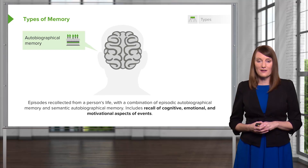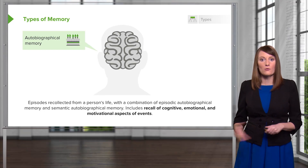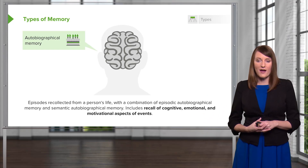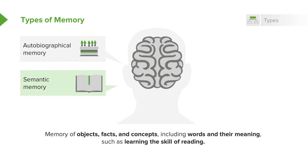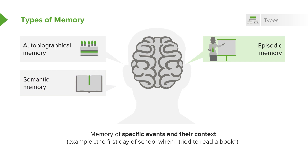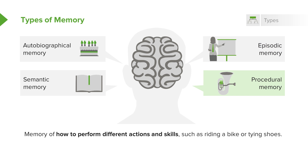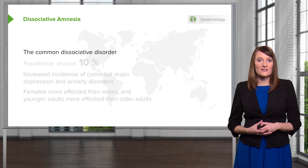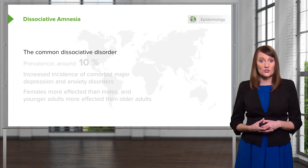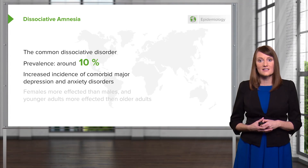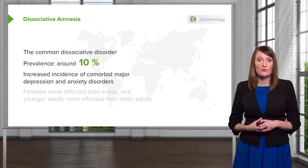There are different types of memory that are important to know about, including autobiographical, semantic, episodic, and procedural memory. These are four different types of memory to familiarize yourselves with. When it comes to dissociative amnesia, this is a common dissociative disorder. The prevalence is around 10%, and there's an increased incidence of comorbid major depression and also anxiety disorder.